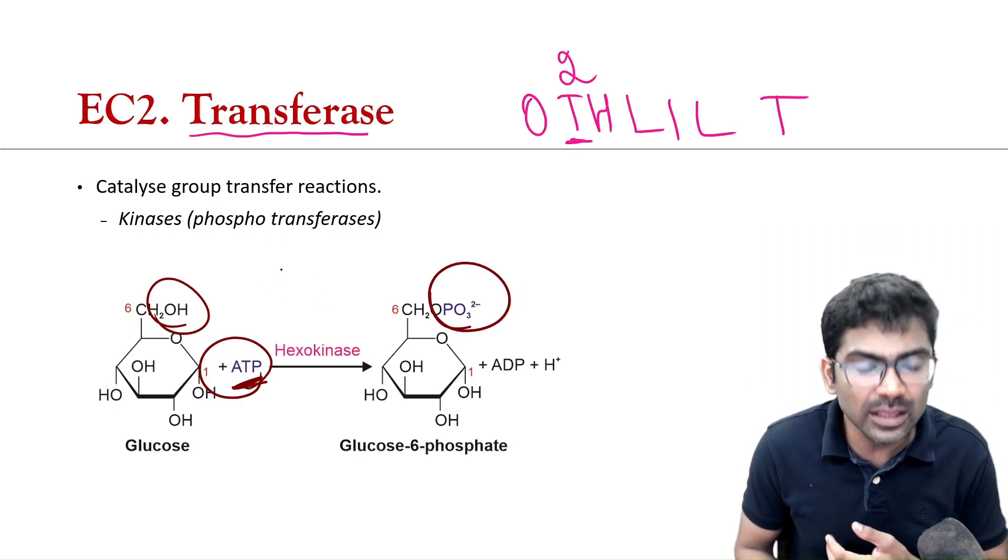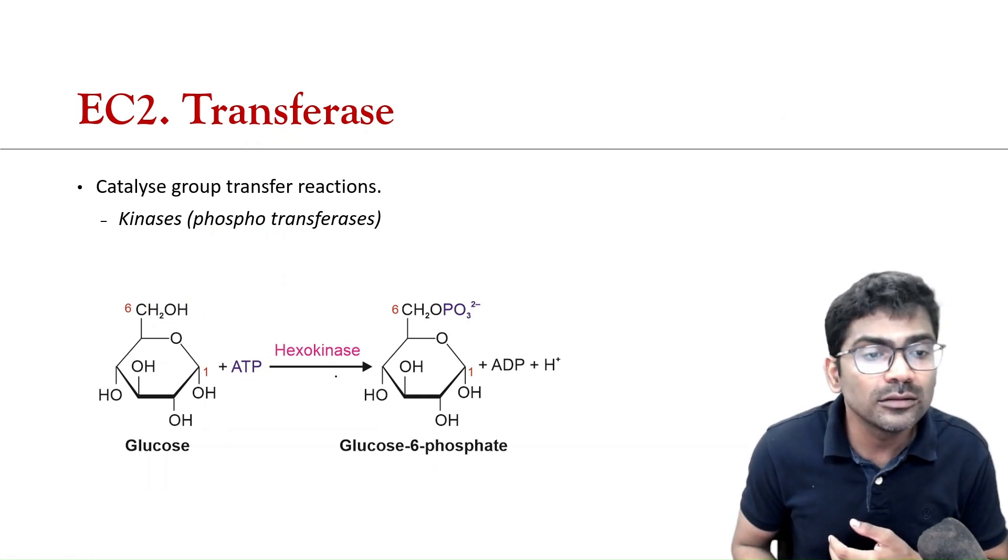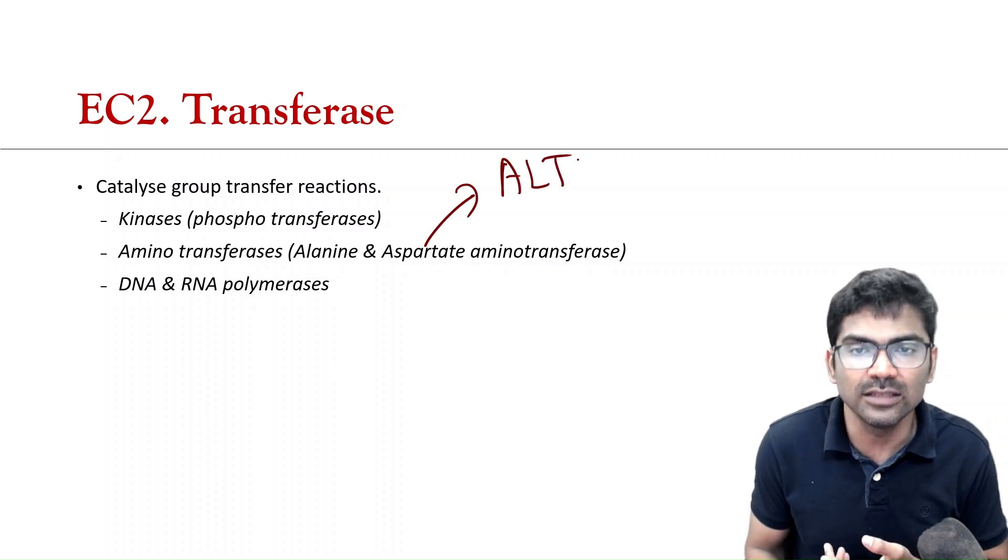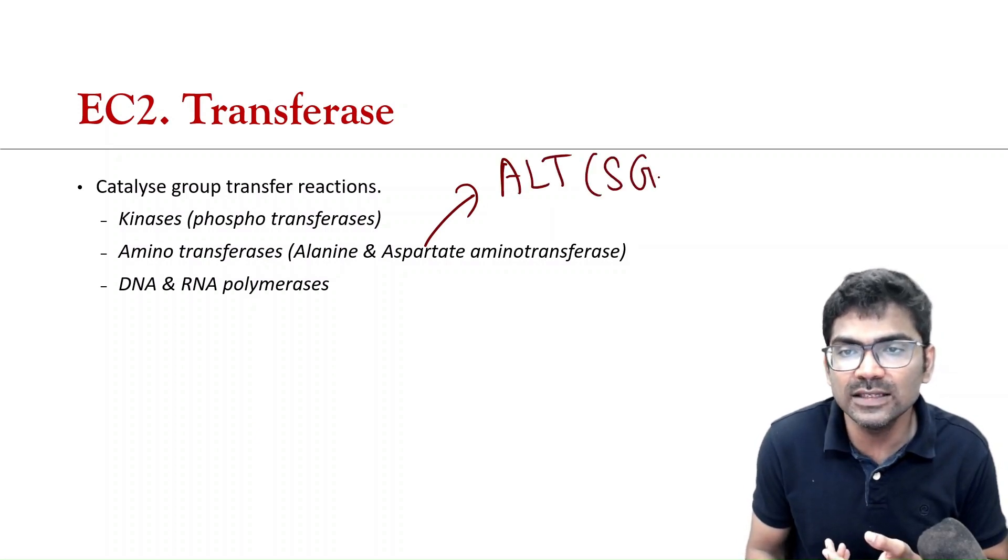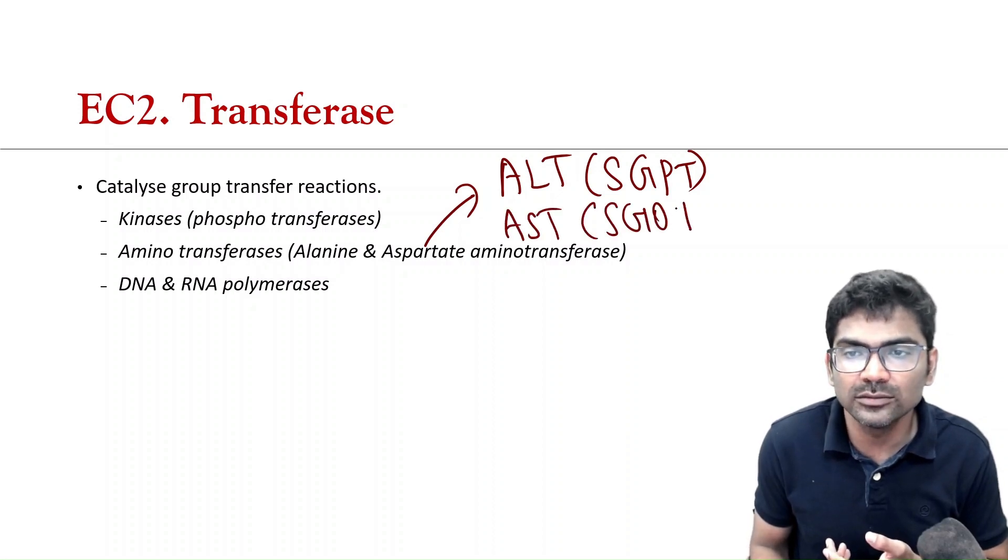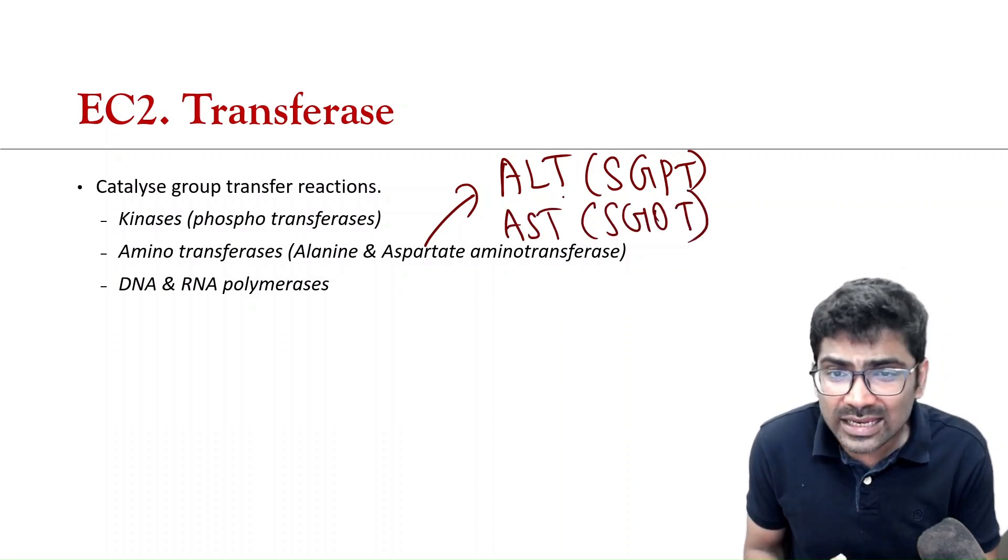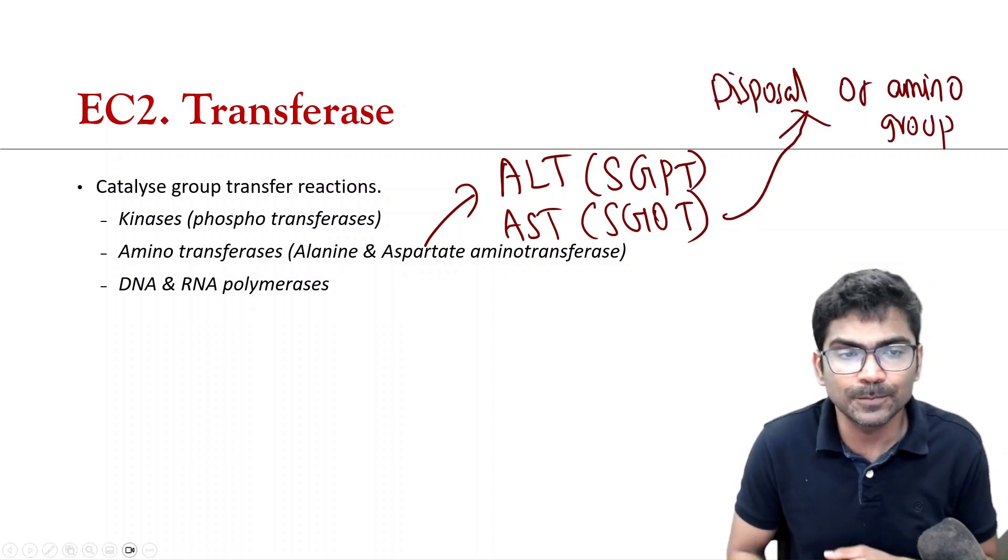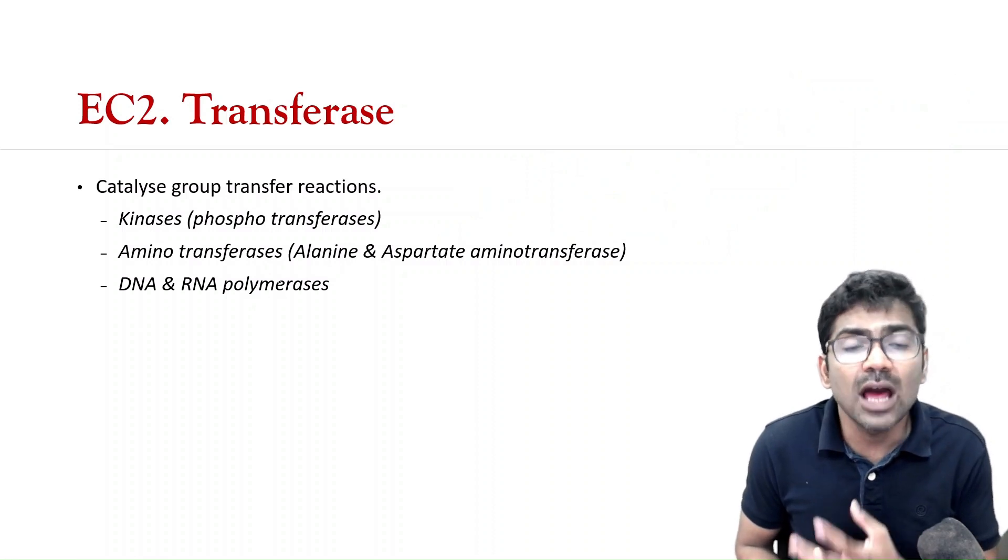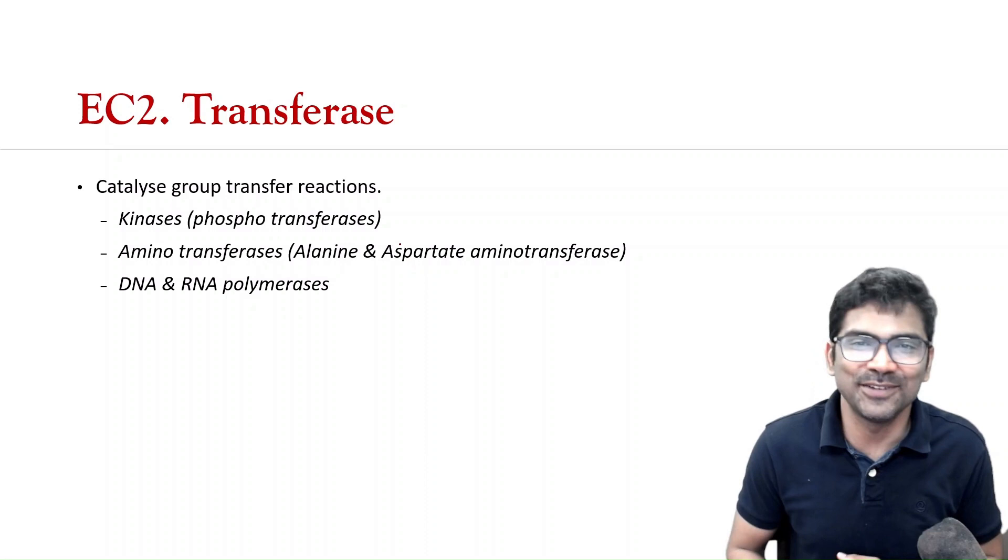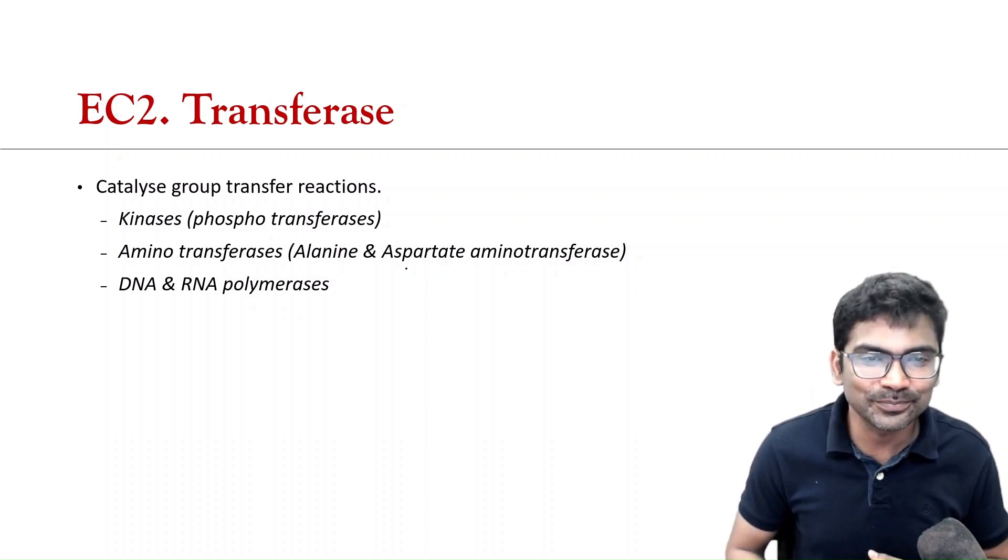So, this is a phosphotransferase. So, all kinases are phosphotransferases. So, ATP is the source of phosphoryl group. So, there are many other transferases. They are aminotransferase. So, there are enzymes known as ALT. ALT is SGPT, AST, that is SGOT. ALT is alanine transaminase, AST is aspartate transaminase. So, DNA polymerase and RNA polymerase also belong to the category of transferases.